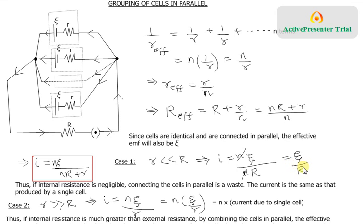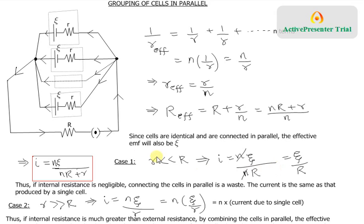If internal resistance is negligible and you had just one cell in the circuit, the current would also be η/R. So even though you connected n cells in parallel, the current through the external resistor is the same as with only one cell. Thus, when internal resistance is negligible, connecting cells in parallel is wasteful — in series you would have gotten n times the current.